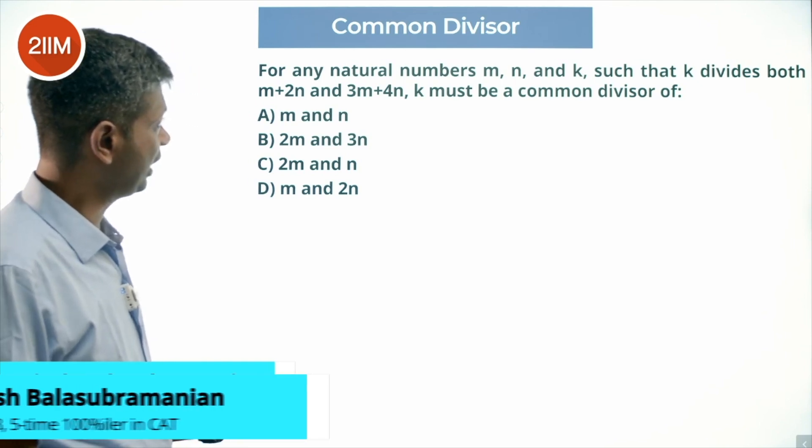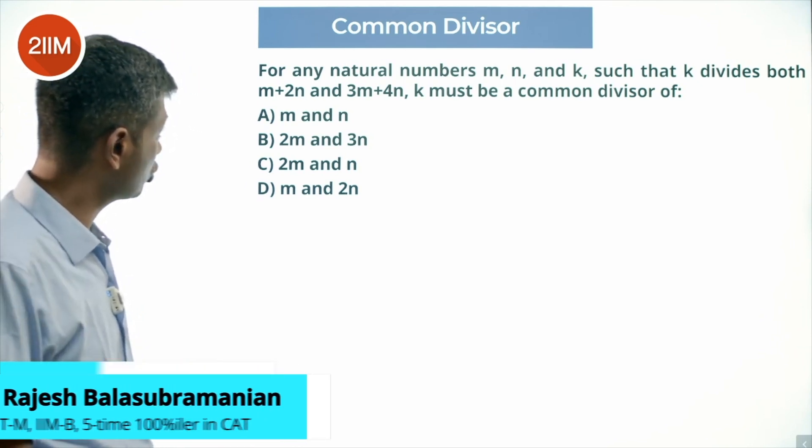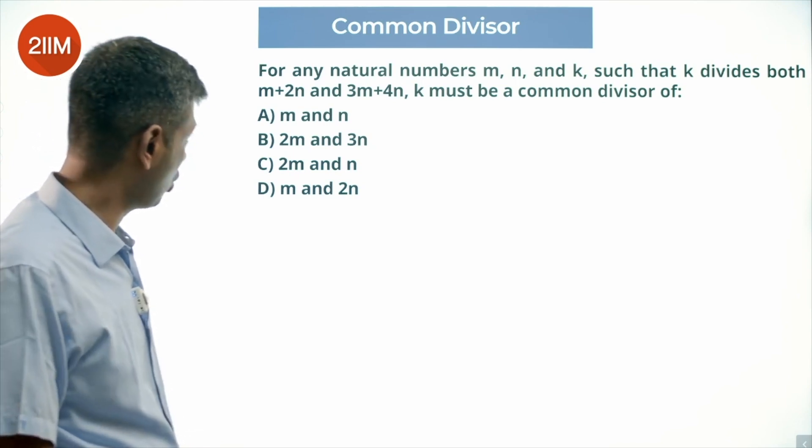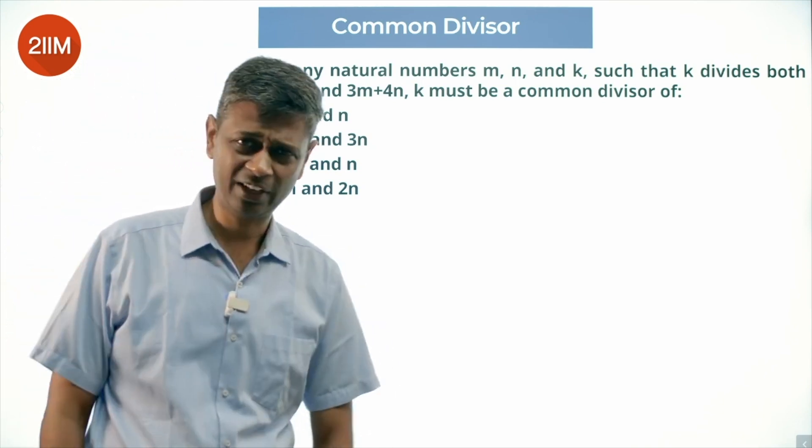For any natural numbers M, N, and K, such that K divides both M plus 2N and 3M plus 4N, K must be a common divisor of - a very nice question, I really like this one.